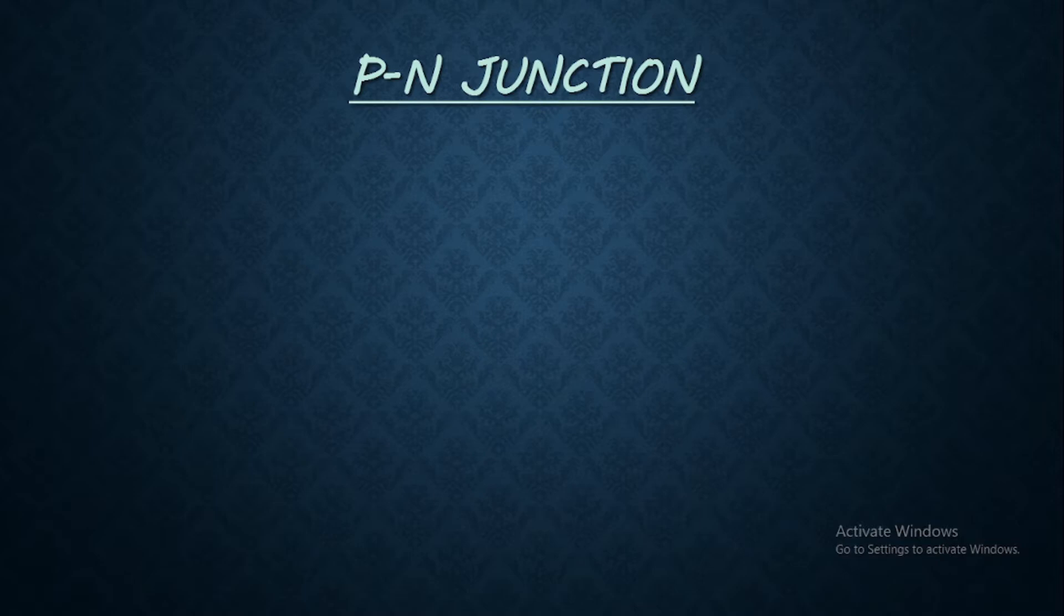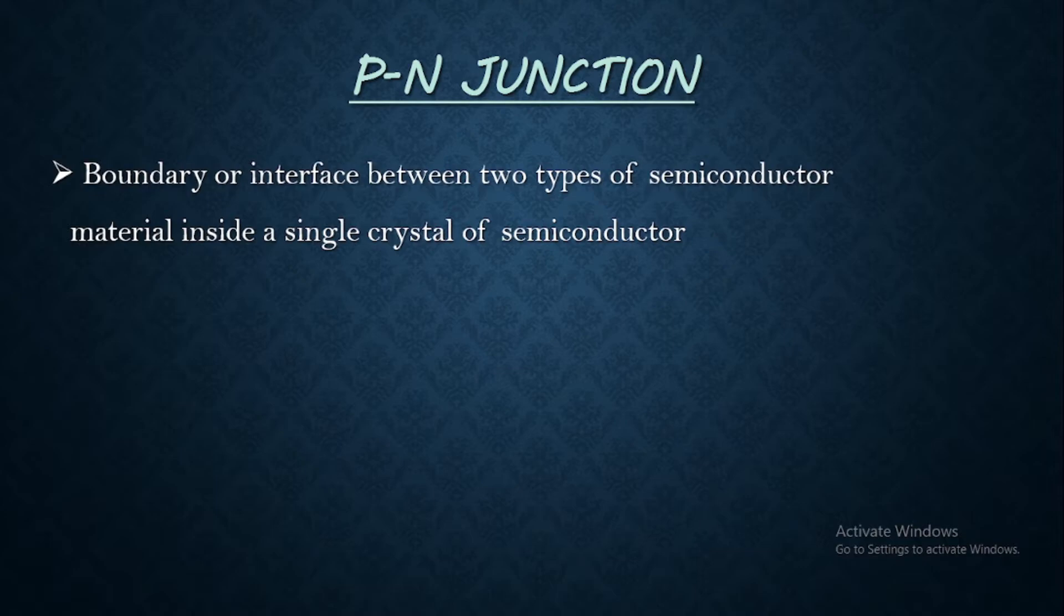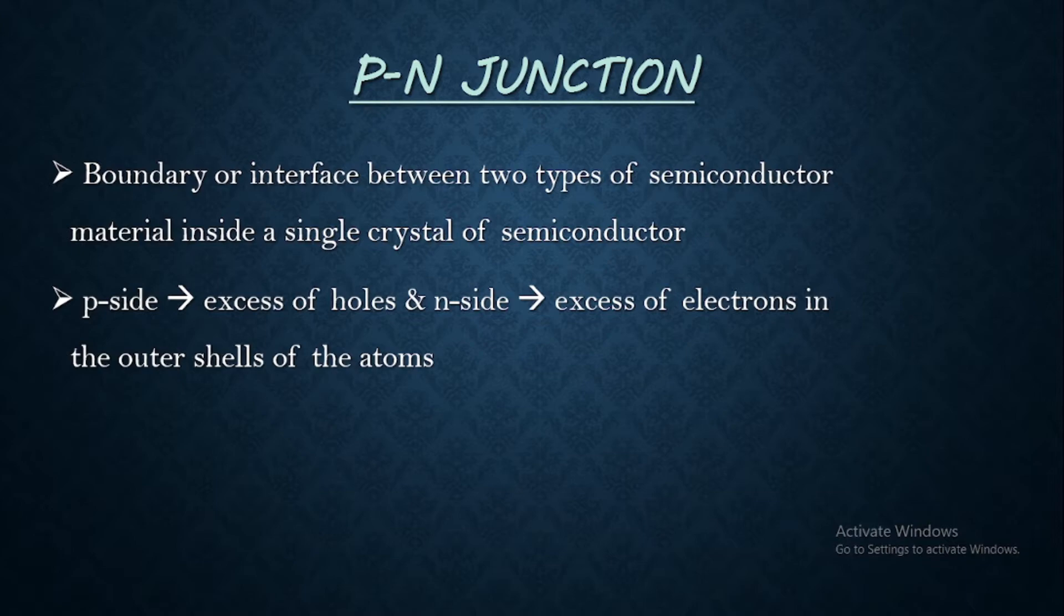Junction is something like an interface. So we can say that a PN junction is a boundary or interface between two types of semiconductor materials. Two types means that is P-type and N-type inside the single crystal of the semiconductor itself. And we know that P-side contains excess of holes while the N-side contains excess of electrons in the outer shells of the electrically neutral atoms there.